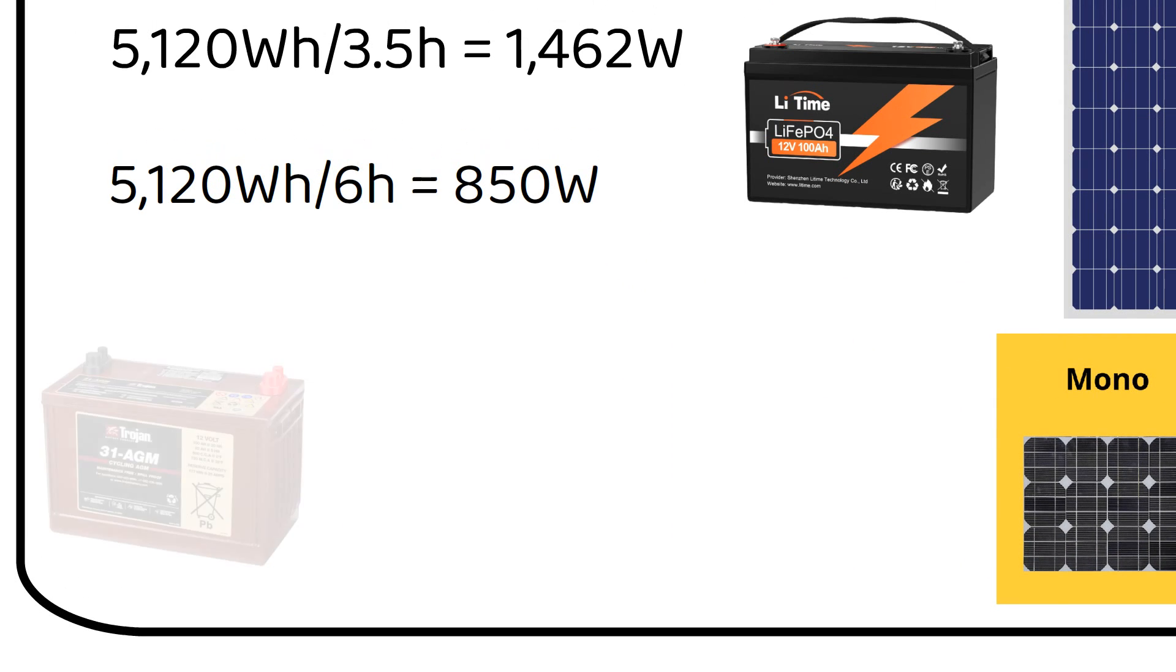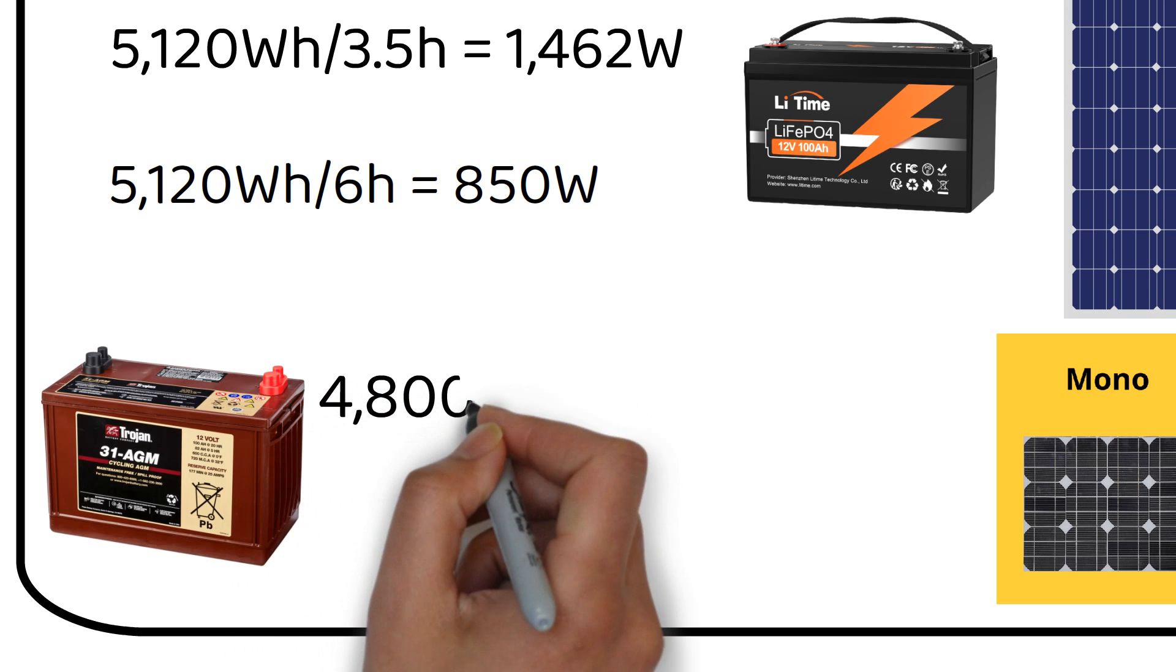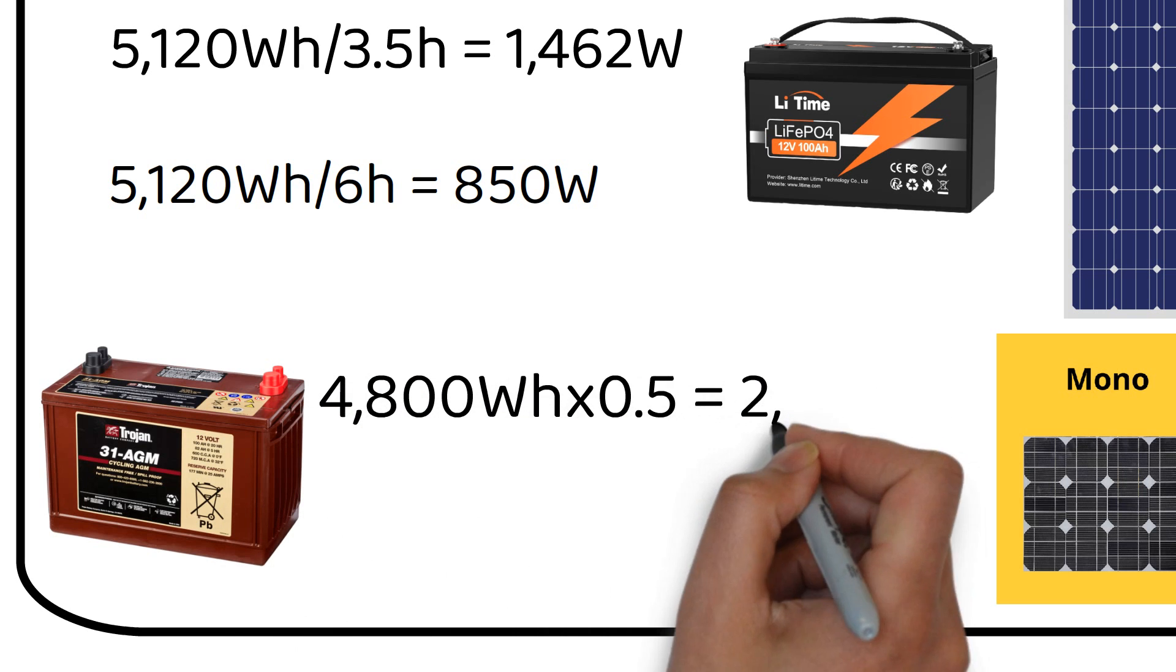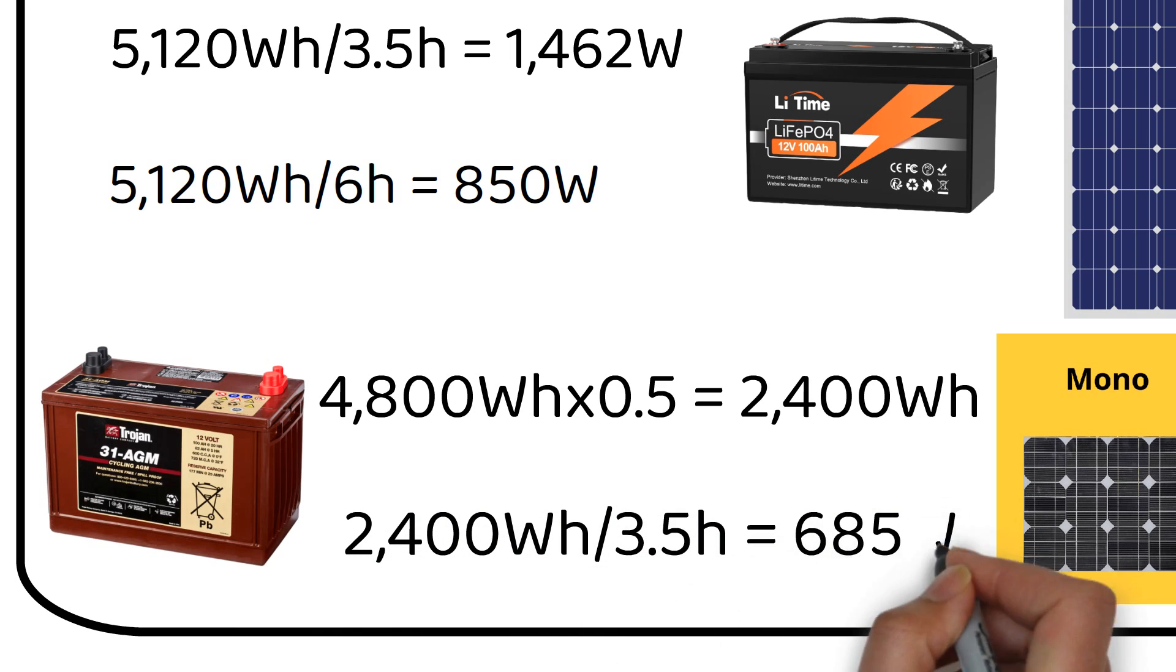But what if we're dealing with a lead-acid battery typically charged from 50 to 100 percent? The calculation changes slightly. We need to recharge 2400 watt hours in one day, which divided by the daily sunlight hours amounts to 685 watts. It's interesting to note that lead-acid batteries require fewer solar panels. This is because we're only recharging half of the battery's capacity, and the nominal voltage of a lead-acid is slightly lower compared to lithium.